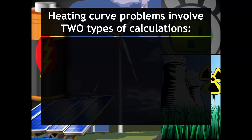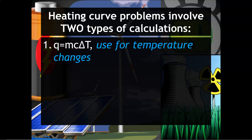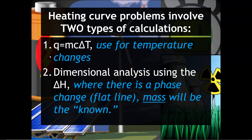Heating curve problems will involve two major types of calculations. The first is Q = mcΔT, used whenever you have a temperature change. The second is dimensional analysis using ΔH, used wherever there is a phase change or a flat line on the heating curve. Your mass will be the known value.